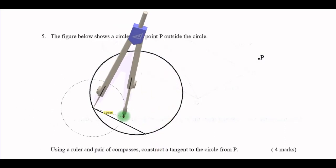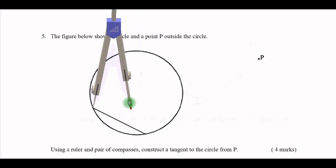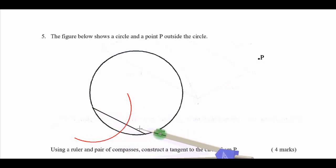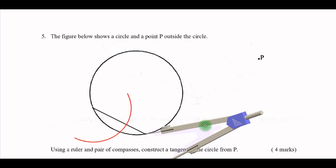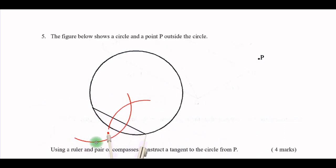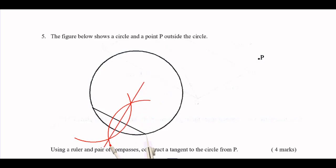I choose a length more than half of this chord and put a mark. Then I use the other end as the center, maintaining the same radius, and put a mark there as well. From there I join the intersection of the arcs. That completes the bisection of the first chord.